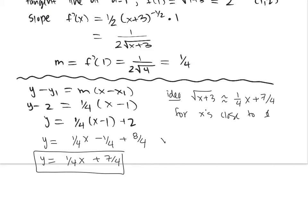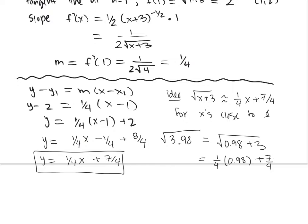How would you estimate root 3.98? First, note we're plugging in x's close to 1, and our function is x plus 3. So write 3.98 as 0.98 plus 3. To estimate root(0.98 + 3), plug x equals 0.98 into the tangent line: one-quarter times 0.98 plus seven-quarters. Back in the day you could do this without a calculator — it's just basic arithmetic. That gives approximately 1.995.